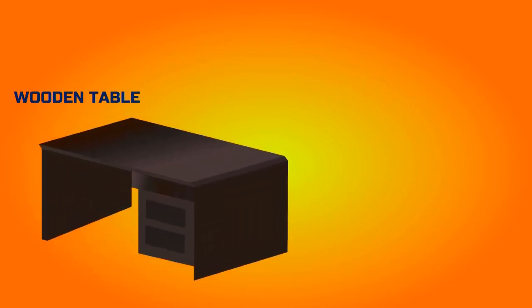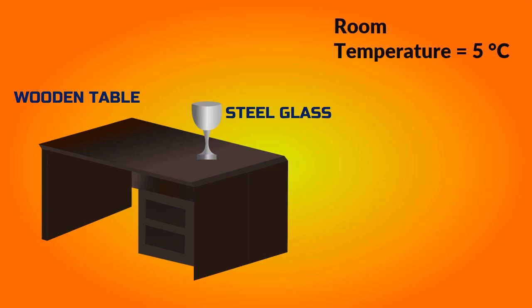Now let's take a situation from your day-to-day life: a wooden table in a room having a steel glass over it. If it's cold outside, say it's at 5 degrees Celsius, we can assume that the steel glass and the wooden table are both at room temperature, 5 degrees Celsius.